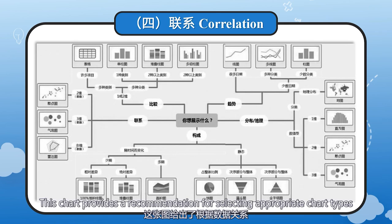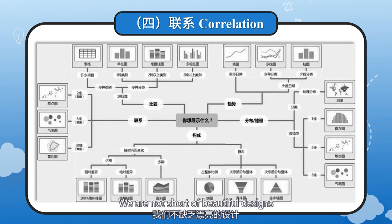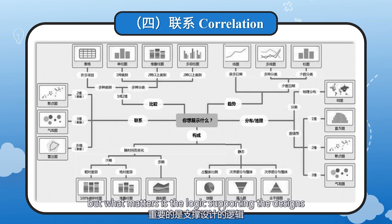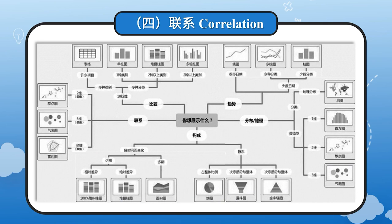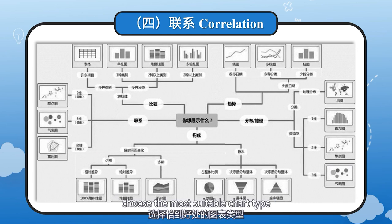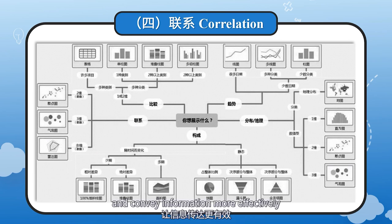This chart provides a recommendation for selecting appropriate chart types based on data relations. We are not short of beautiful designs, but what matters is the logic supporting the designs. How to extract different information from the same dataset, and based on what needs to be articulated, choose the most suitable chart type to aid in content expression and convey information more effectively — this is what we need to focus on.